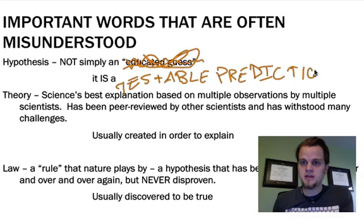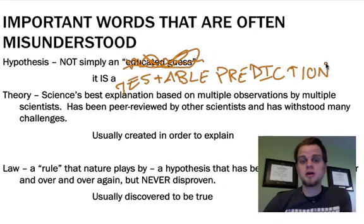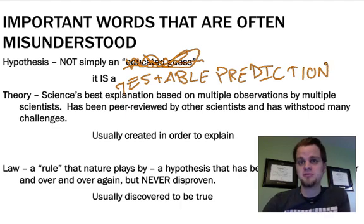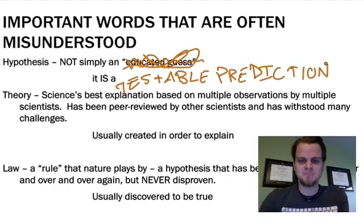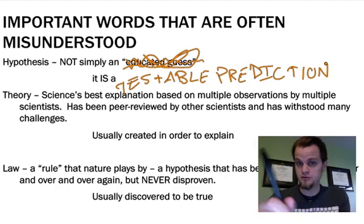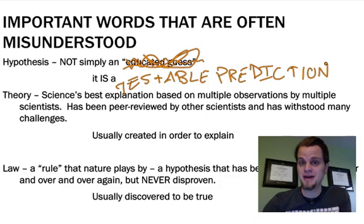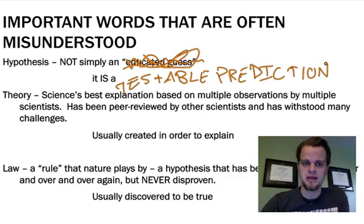Write that down. In order to be a true hypothesis, it has to be testable, and you have to be able to make a prediction. If you can't test it, there's no use calling it science. If you're not predicting something, it's not science. You're in high school now — you know it's a testable prediction. It's a better way of looking at it.